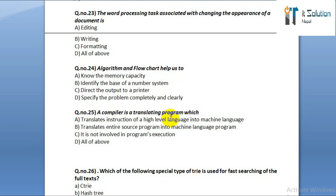Question number twenty-five: a compiler is a translating program which option A: translates instructions of high level language into machine language. Option B: translates entire source program into machine language program. Option C: it is not involved in program execution. Option D: all of above.